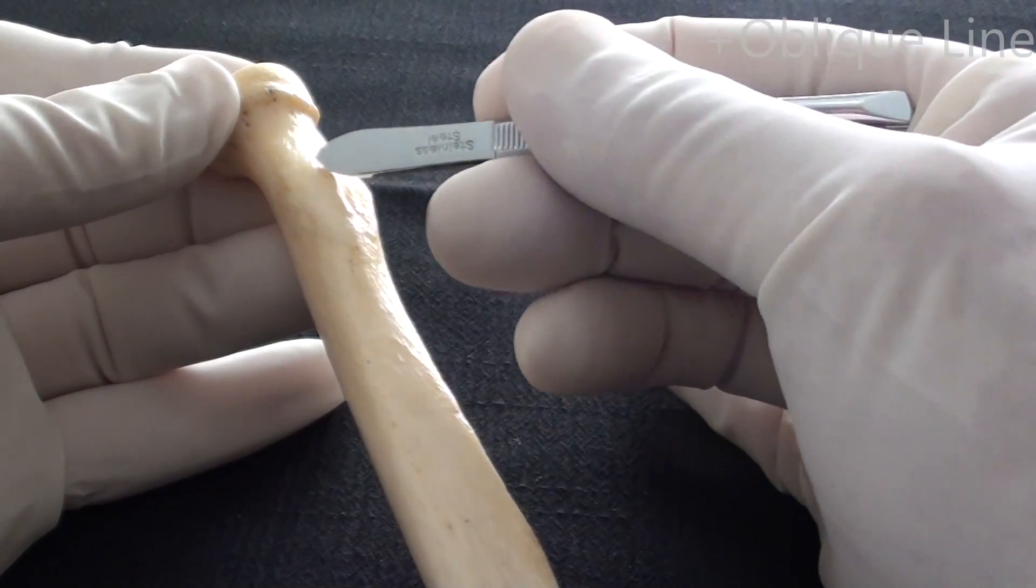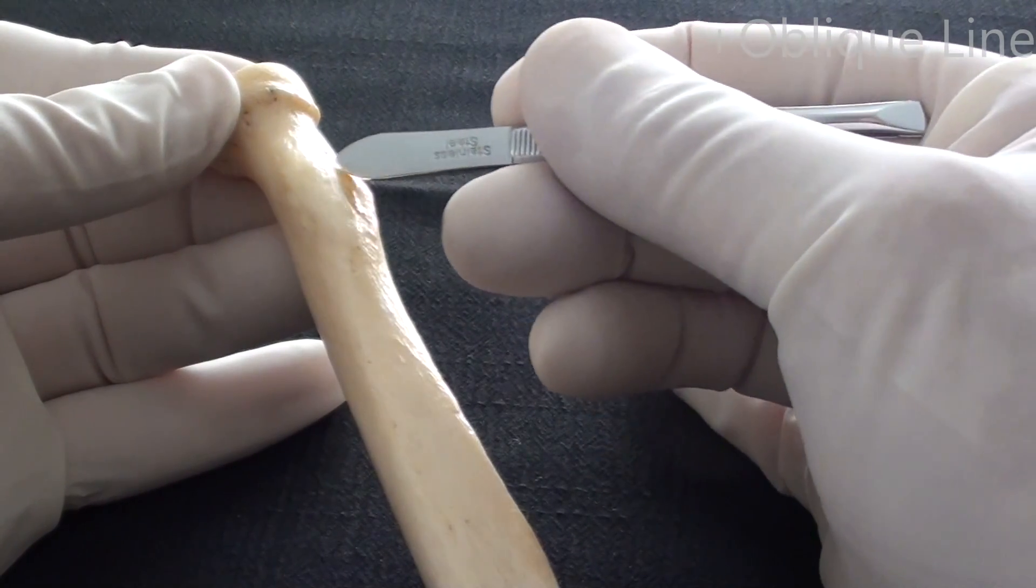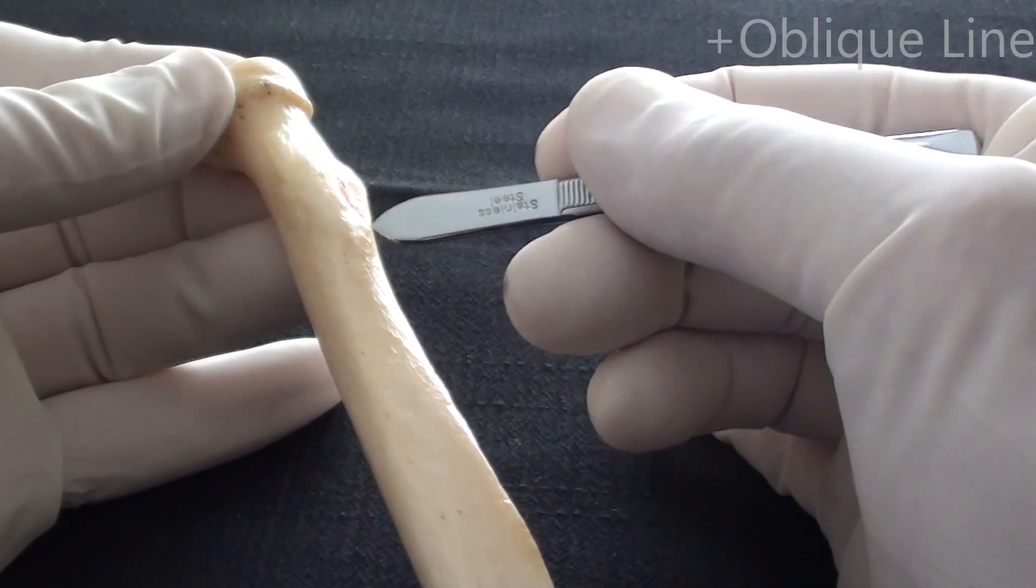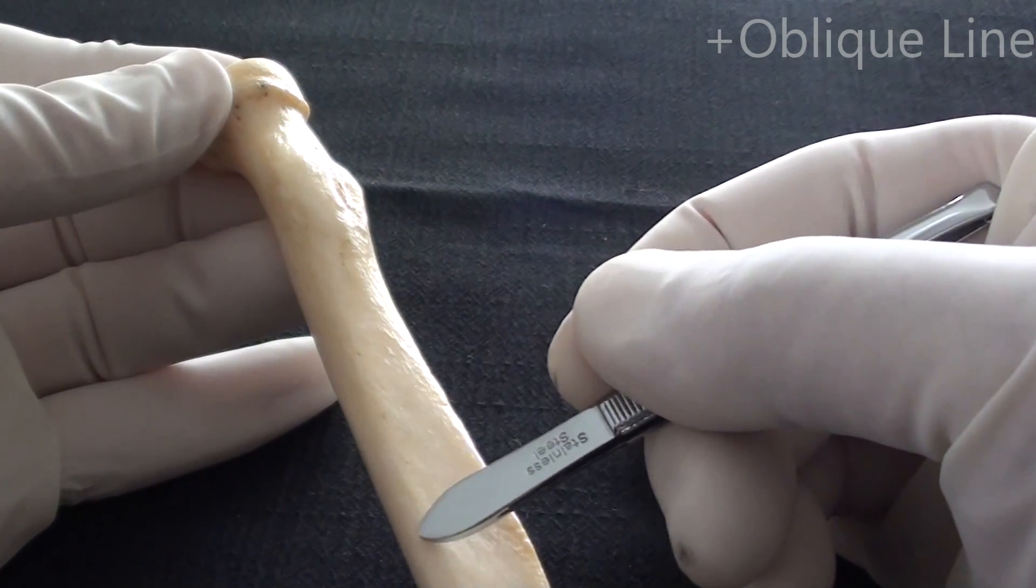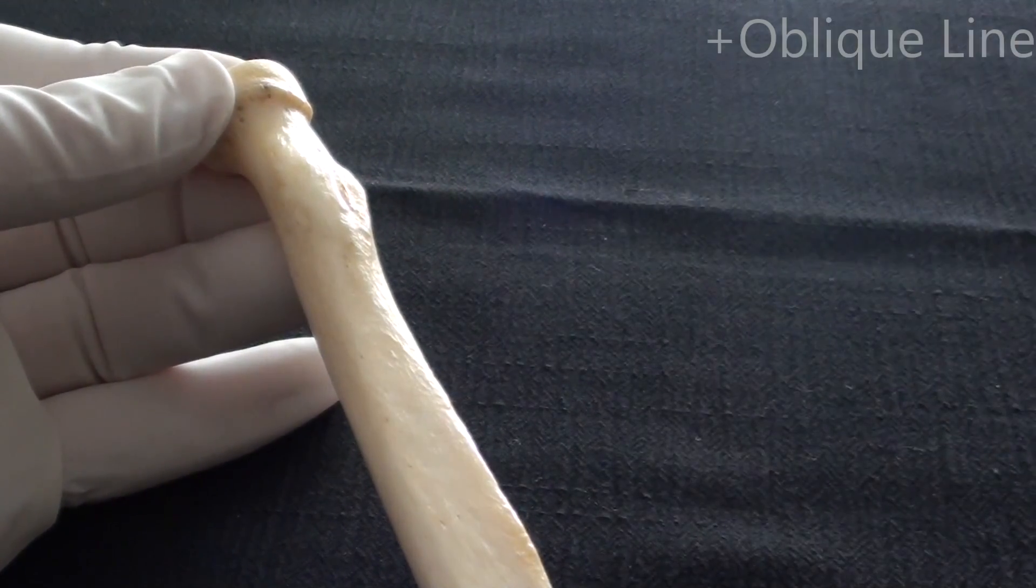So, if we're to describe it and to define it, it goes from radial tuberosity, then obliquely across and it blends into anterior border of the radius.